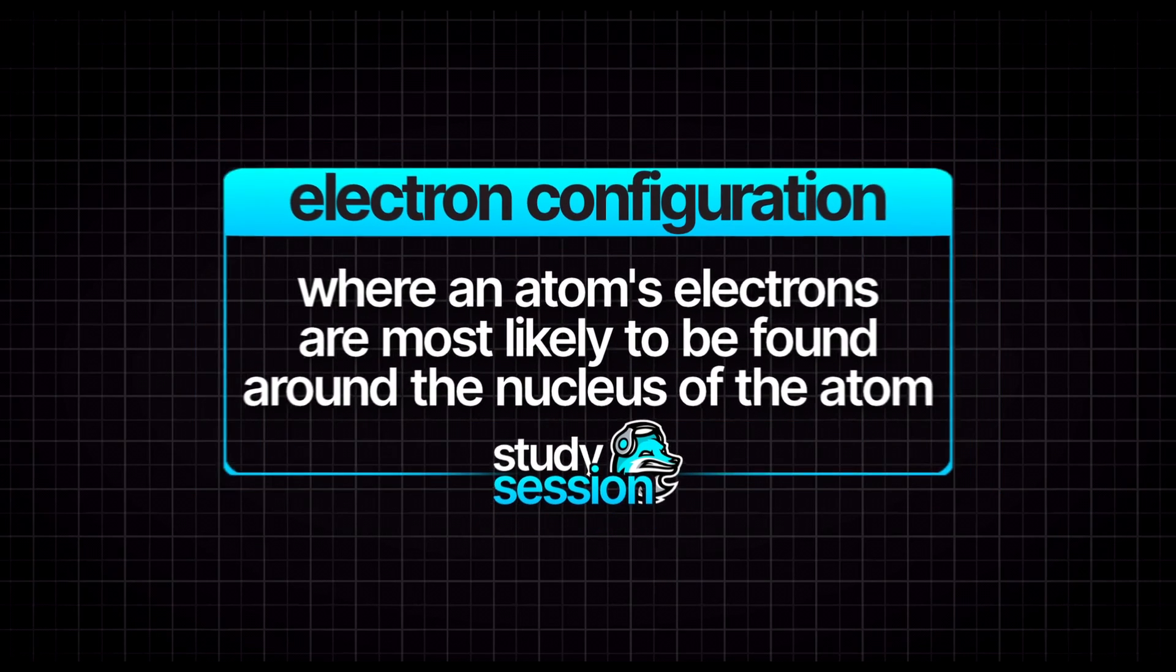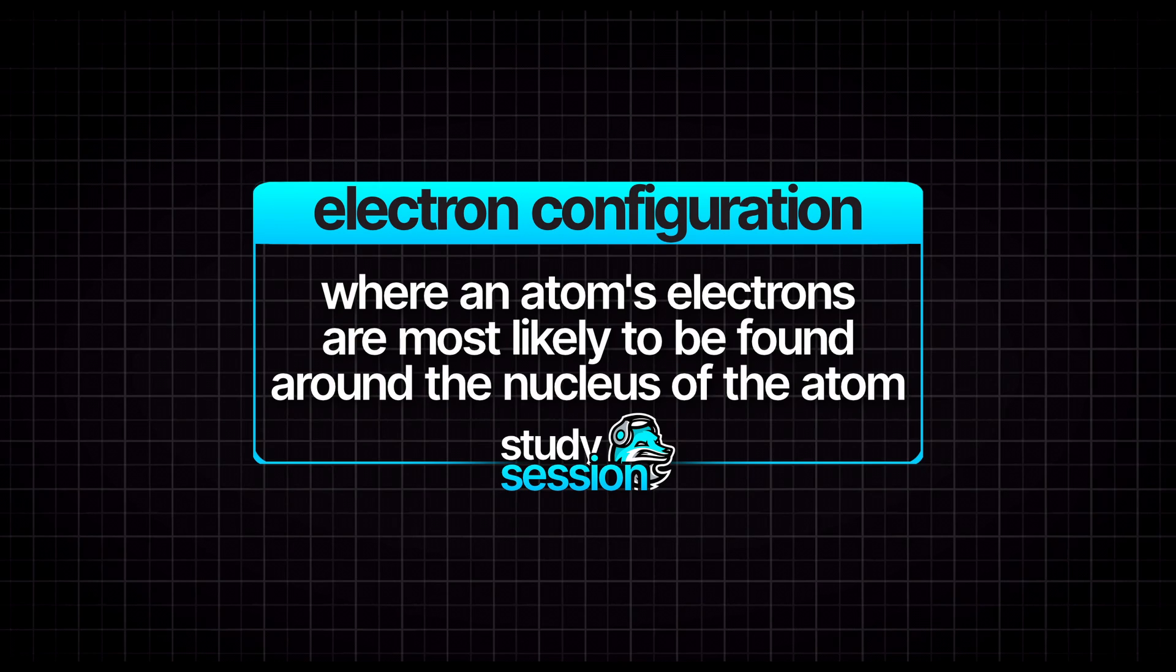When finding the electron configuration of an atom, we are being asked where does that atom place its electrons, i.e. what shells and orbitals are its electrons most likely to be found in.